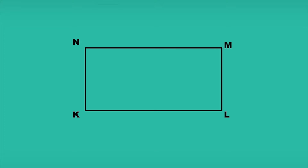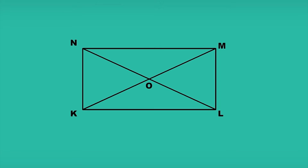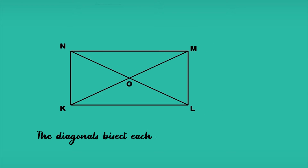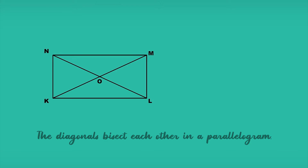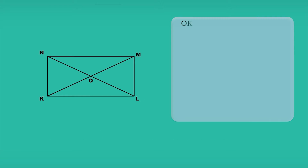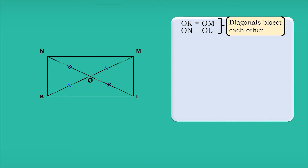In rectangle KLMN, the diagonals KM and LN meet at O. Since it is a parallelogram, the diagonals bisect each other — that is, OK equals OM and ON equals OL. Let's compare the lengths of its diagonals. Are they equal?